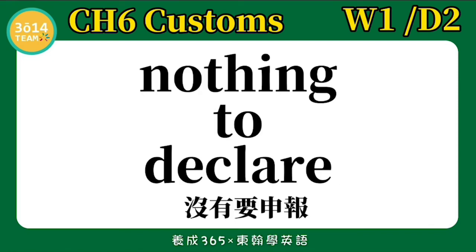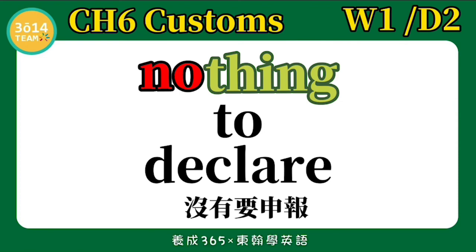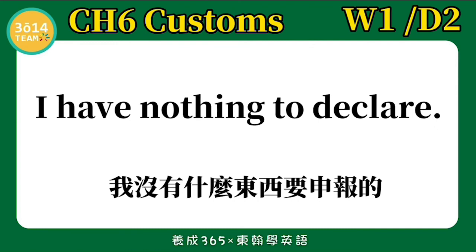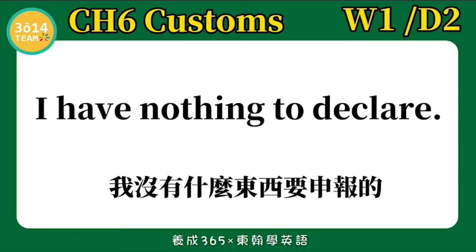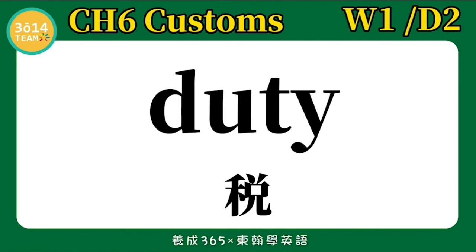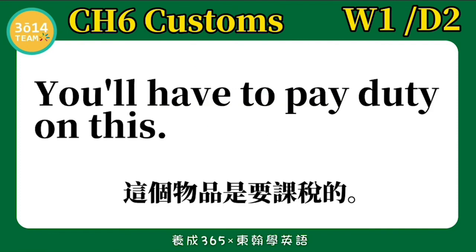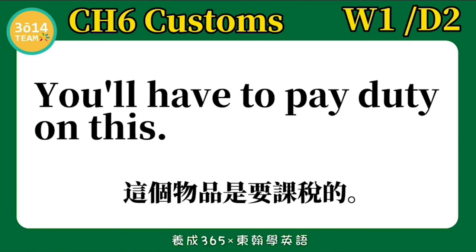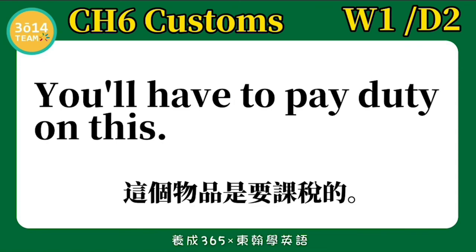Nothing to declare 没有要申报. N-O 在这里不念 no, 是念 not, T-H-I-N-G 念 thing. Nothing. Nothing to declare. I have nothing to declare 我没有什么东西要申报的. 跟着我念一次: I have nothing to declare. Duty 税、税金. You'll have to pay duty on this 这个物品是要课税的. 跟着我念一次: You'll have to pay duty on this. You'll 是 you will 的缩写. You'll have to pay duty on this.